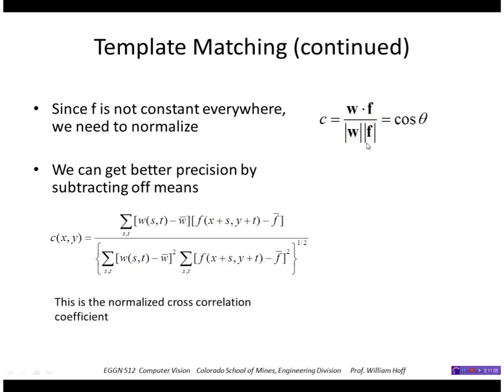So if we do that, this is called the normalized cross-correlation coefficient, and the range is minus 1 to plus 1. So if the score is plus 1, we have a perfect match between the template and the image.